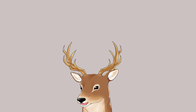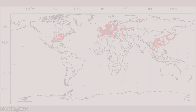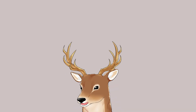If we're talking about the order, they are distributed worldwide, but if we're talking about the Panorpidae family, it's more limited. Their distribution range looks fragmented — and it is fragmented. They live in cool and humid environments, hence this distribution range.